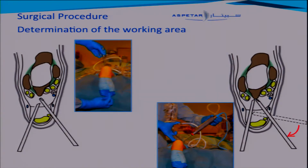Once we've seen this area with FHL and bone, we determine our working area. We come from the first web space towards a more oblique angle. When we use this oblique approach, we pull back our scope and go in an oblique 45-degree position — this is our working area.